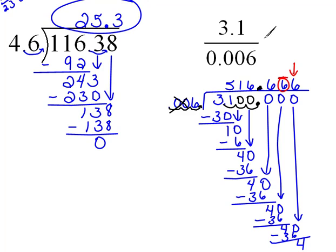So, for my final answer, this would be 516 and 67 hundredths. So, if it tells you to round to the nearest whatever, you have to keep going until you are one digit past there so you can see what you need to do with the rounding.